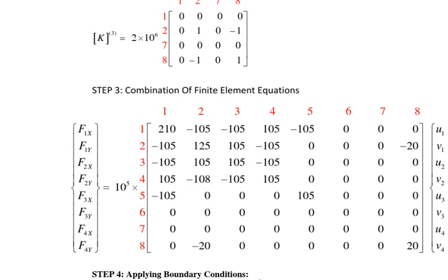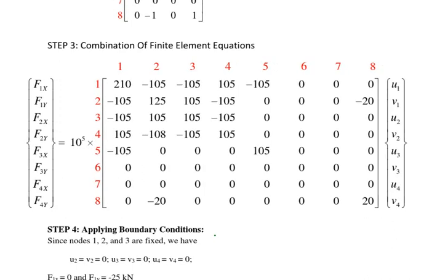Now we combine the finite element equations — that is, we assemble K1, K2, and K3 into the global stiffness matrix. The global stiffness matrix equation is F = K·U, where K is the assembled global stiffness matrix. The global matrix is written with displacement indices 1 through 8 along both rows and columns, and then all element matrices are assembled by adding contributions at the matching indices.